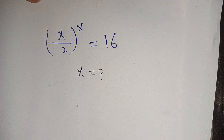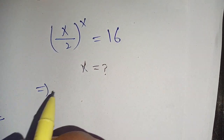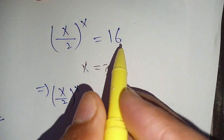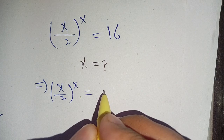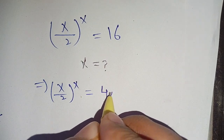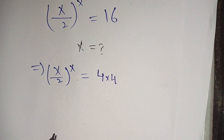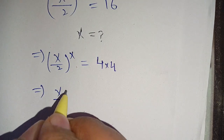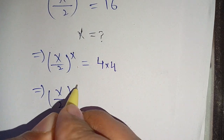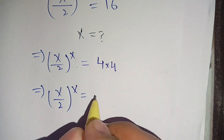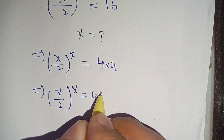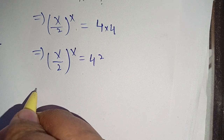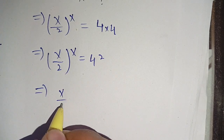We can write the equation as (x/2)^x = 16. We can break down 16 in terms of 4: we write it as 4 times 4, which equals 16, or 4². So (x/2)^x = 4².